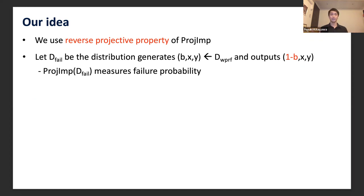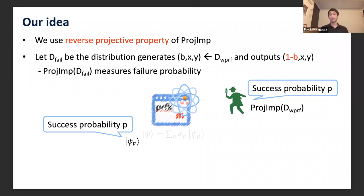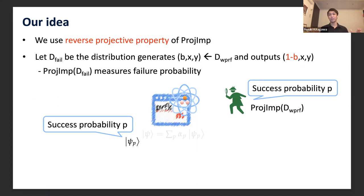Consider the following situation. Suppose we have a quantum program ψ = Σ_p α_p |ψ_p⟩. If we apply projective implementation for D_wprf and measure the success probability, obtaining outcome p, then the quantum program collapses to ψ_p — a quantum program with success probability p. From the projective property of projective implementation, if we apply projective implementation for D_wprf again, we obtain outcome p with probability one.